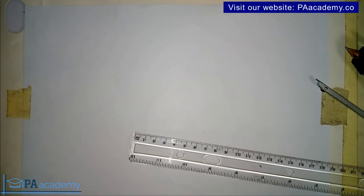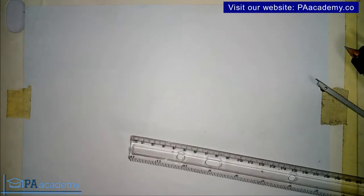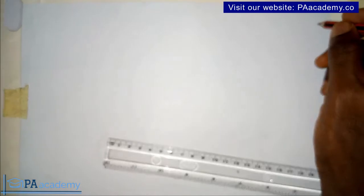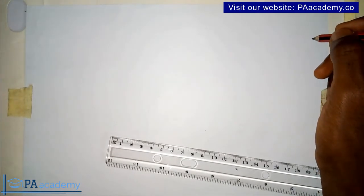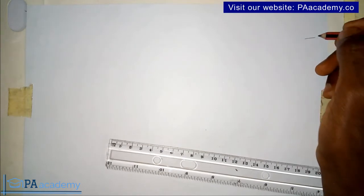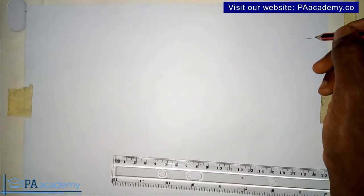Hello and welcome to PA Academy. In this video I'm going to show you how to construct any polygon when you are given the length of the side. So if you have a polygon and you should construct a pentagon, that is five sides with a length of let's say five centimeters, how do you go about it?